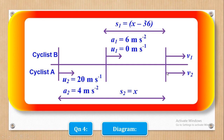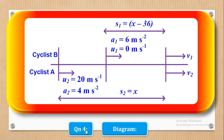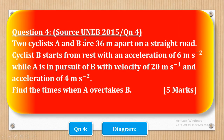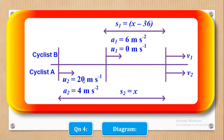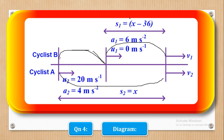We draw a sketch: cyclist A is behind cyclist B by 36 meters. Cyclist B starts from rest with acceleration 6 m/s². Cyclist A starts with velocity 20 m/s and acceleration 4 m/s². We let cyclist A move distance X before overtaking, meaning cyclist B will have moved X minus 36, since the initial gap between them is 36 meters.